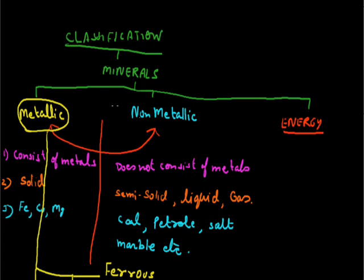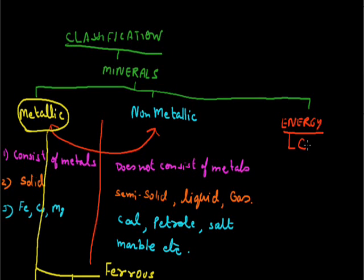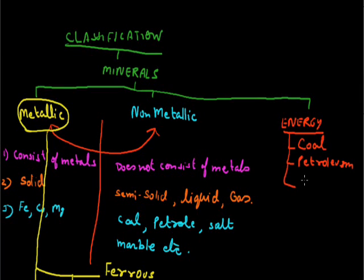So, we first classify minerals into metallic, non-metallic, and energy minerals. Metallic minerals are further classified into ferrous and non-ferrous. Energy minerals are those from which we create energy or power. For example, by burning coal in a thermal power plant, we produce energy. Similarly, by burning petroleum, we get energy to run trains and vehicles. The third energy mineral is natural gas, like the biogas plant.